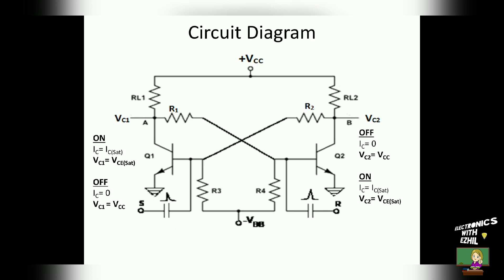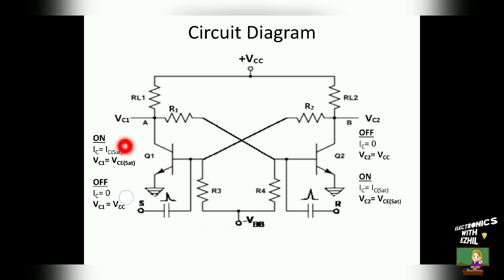The circuit will stay at this second stable state until the external set trigger pulse is given to the base of transistor 1. Once the set trigger pulse is applied, transistor 1 switches from off to on state. Due to the regenerative operation, transistor 2 switches from on to off state. Hence we can conclude that the bistable multivibrator will stay either at plus VCC or VCE saturation until external trigger pulses are applied.